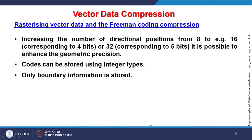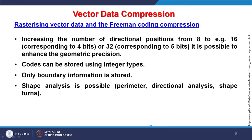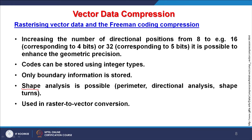In Freeman coding, only the boundary is stored, which is why it is called a chain code. When we say shape, we are talking about vector data. Once data is in that format, perimeter, directional analysis, and shape terms can be estimated — their length and perimeter etc. can be analyzed. This concept can also be used for raster-to-vector conversion.